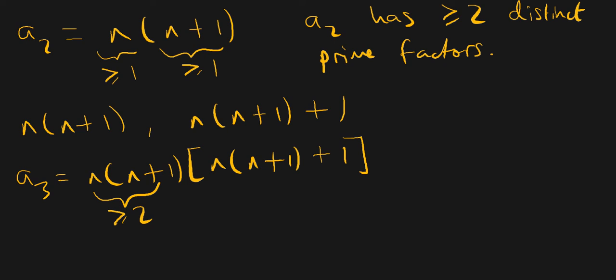Since n times n plus one and n times n plus one plus one are consecutive numbers, the expression n times n plus one plus one has at least one prime factor which is distinct from the prime factors of n times n plus one. So this expression contributes at least one distinct prime factor, meaning a3 has at least three distinct prime factors.